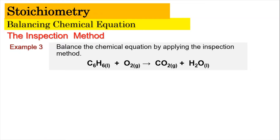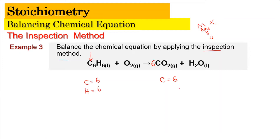Now Example 3 — same procedure: metal, non-metal, hydrogen, and oxygen. But here we don't have any metal, so we skip that step. The non-metal is carbon, so we start with carbon. Carbon on the left-hand side — C6H6 — has six; carbon on the right-hand side (CO2) has one, so we put 6 in front of CO2. Then hydrogen: on the left, C6H6 has six hydrogen; on the right, H2O has only two, so we put 3 in front of H2O: three times two equals six.